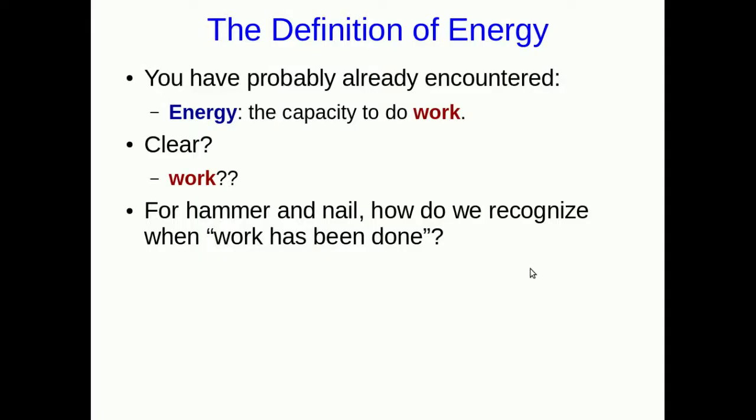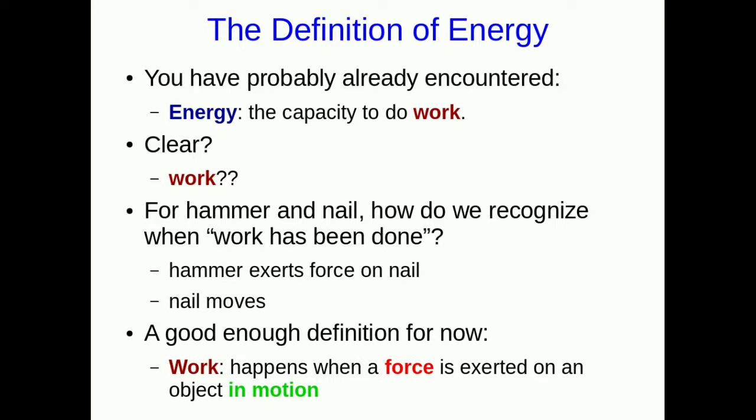For the hammer and nail example then, let's look at it in a slightly different way. How do we recognize when work has been done? Well the hammer has to exert a force on the nail for work to be done, but we're also going to insist that the nail has to have moved. If you just sit like I did at first pressing on the nail and the nail isn't going anywhere then no work is getting done. A force is being exerted but no work is done. And this is going to give us our definition that's good enough for now of work. Work happens when a force is exerted on an object in motion. So you have to have two things happening for work to happen. Something has to be moving and a force has to be acting on it while it moves.